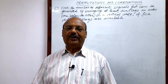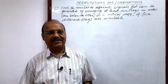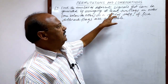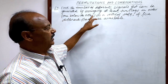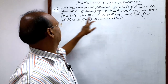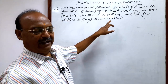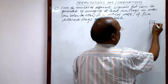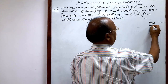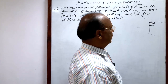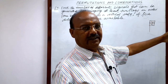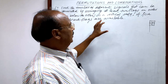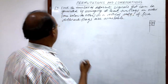Welcome students. Let us see a very interesting and important question from the chapter Permutations and Combinations. The question is: find the number of different signals that can be generated by arranging at least two flags in order, one below the other on a vertical staff, if five different flags are available.